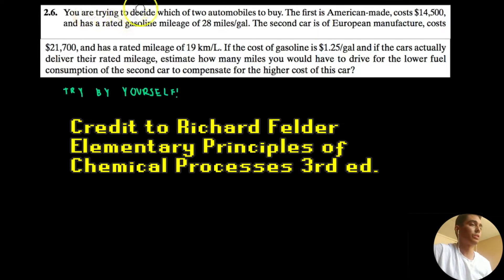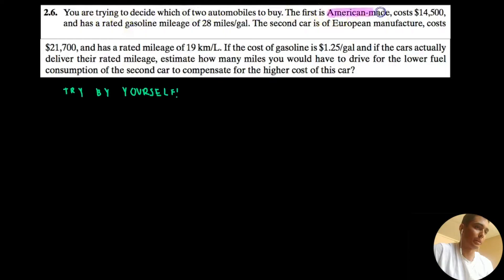You're trying to decide which of two automobiles to buy. The first is American made, cost $14,500, mileage of 20 miles per gallon. The second one is European, it costs $21,700, mileage of 19 kilometers per liter. Of course, they make us convert. If the cost of gasoline is $1.25 per gallon, I wish. Where? I want to move there.